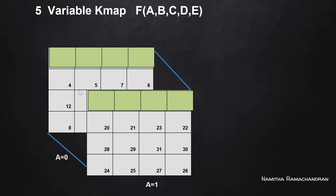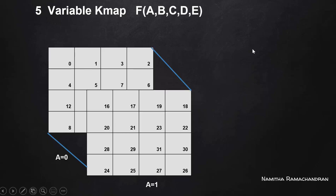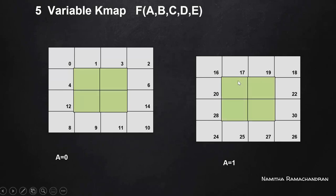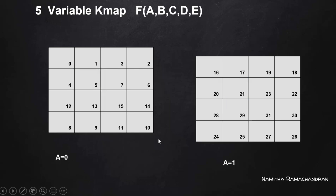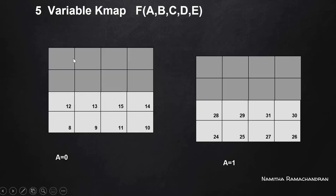This is a valid match in the case of a 5-variable KMAP. In another case, suppose certain cells in the KMAP with a equal to 0 contain full 1s; we can consider those cells a valid match with corresponding cells in the other KMAP. In yet another case, suppose all cells of the KMAP with a equal to 0 match with all cells where 'a' equals 1 — this is also a valid match and we can generate the minimized form.